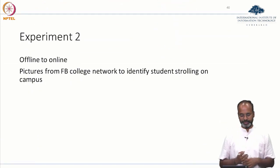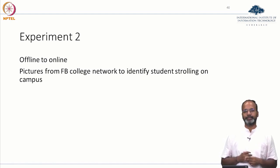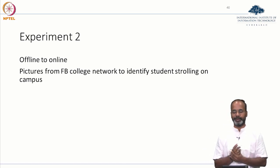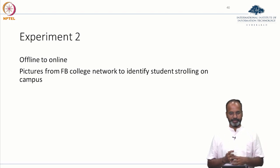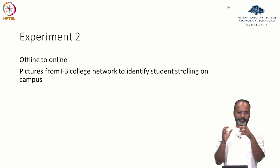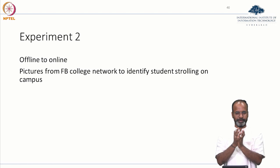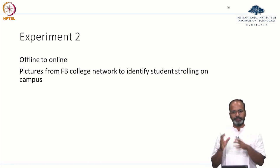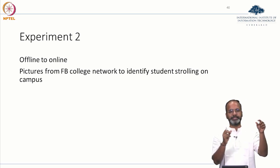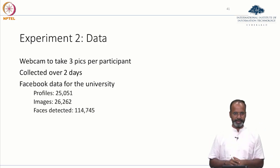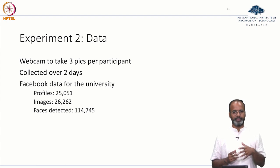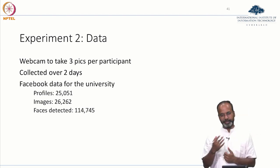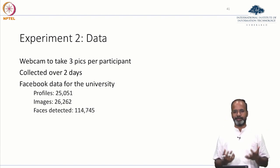They did experiment 2 — they tried offline to online: collect data somewhere in offline mode and then link it to data available in online mode. They used pictures from a Facebook college network to identify students strolling on the campus. They took one campus, collected data from that campus's Facebook profiles — during those days it was possible to search a particular campus and get all profiles from it.